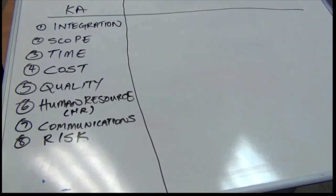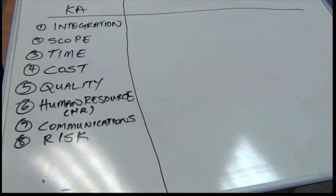And then finally, we also plan risk responses. This is where we come out with a plan of action for how these risks will be effectively managed. And the last one is controlling the risk.